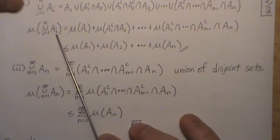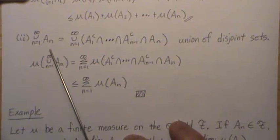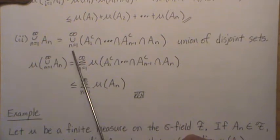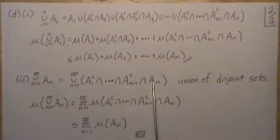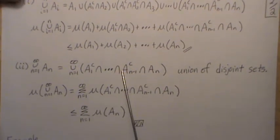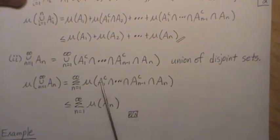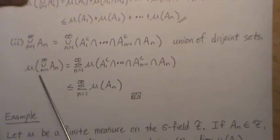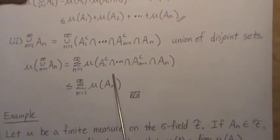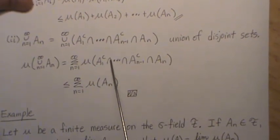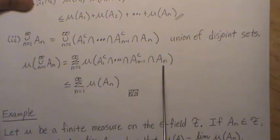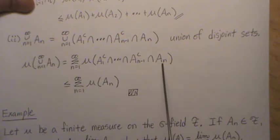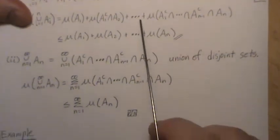For the infinite case, we assume this holds for infinity. The infinite union of sets can be written as the same disjoint construction going to infinity. Since mu is a measure on a sigma field, mu of this infinite union equals the sum of the individual disjoint pieces. Each subsequent set intersected with complements is a subset of the original, so the same inequality carries through from the finite case to the infinite case, completing the proof.